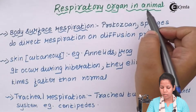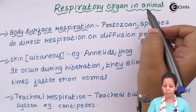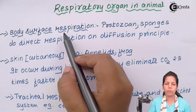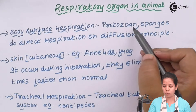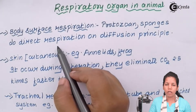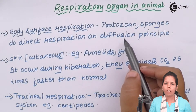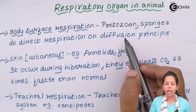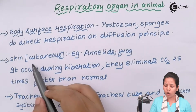Respiratory organs in animals — the area which helps them to respire could be many. One of them is body surface respiration. The outer surface or the outer skin layer of that particular organism may help them to respire in certain conditions. For example, sponges and protozoans — these protozoans could be plasmodium or any other protozoans. They do direct respiration, which means they rely on the principle of diffusion. Diffusion is the movement of gaseous molecules from higher concentration to lower concentration, and this movement is done by the upper layer of their skin.